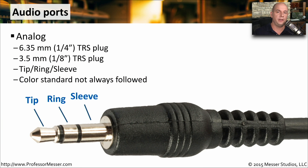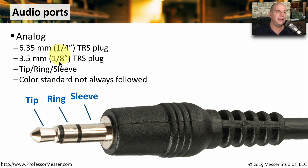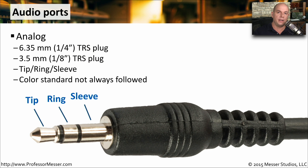For analog audio connectivity, computers use a TRS plug — tip, ring, and sleeve. There are two sizes: a quarter inch (6.35 mm) and an eighth inch (3.5 mm). You may see different colors on the back of your computer for different TRS connections, but there is no universal standard for those colors, so you need to look carefully at where you're plugging them in.